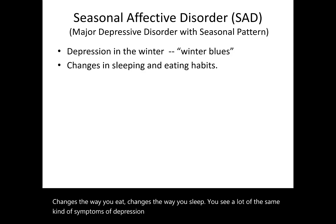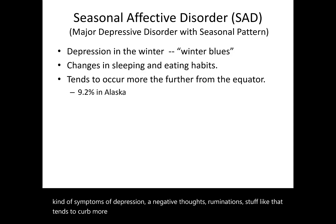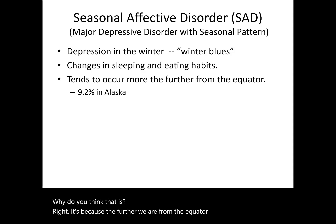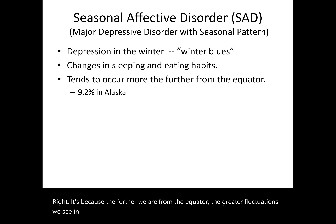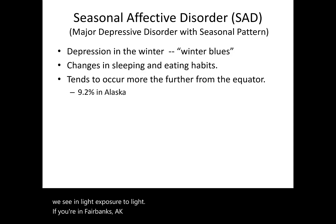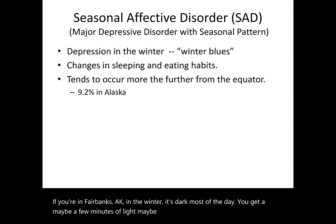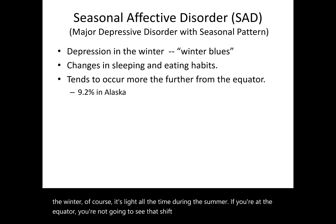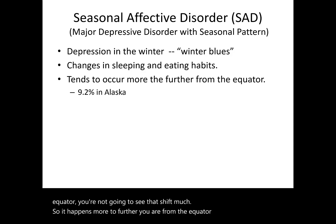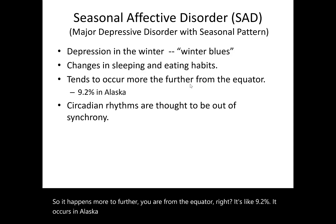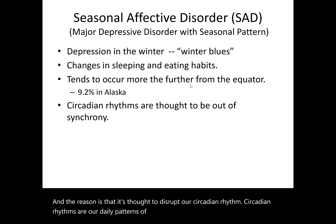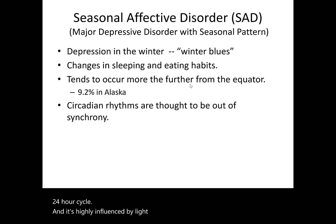Seasonal affective disorder occurs more the further people live from the equator — because the further from the equator, the greater the fluctuations in light exposure. In Fairbanks, Alaska, in winter there may be only a couple hours of light per day, while at the equator that shift is minimal. It occurs in about 9.2% of people in Alaska. The mechanism is thought to disrupt circadian rhythms — our daily patterns of sleep, arousal, eating, and hormones in a 24-hour cycle, which are highly influenced by light. Treatment includes antidepressants like SSRIs, but also light therapy.